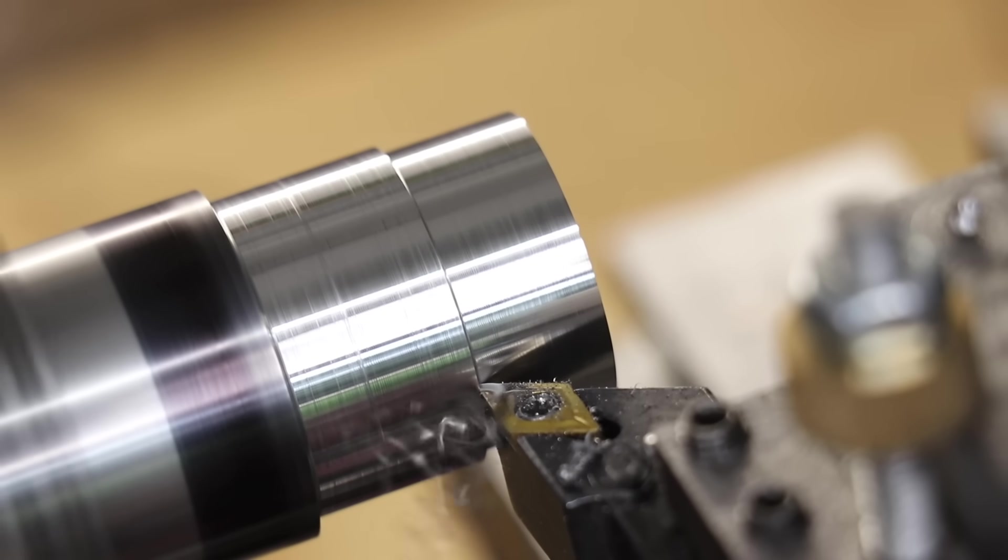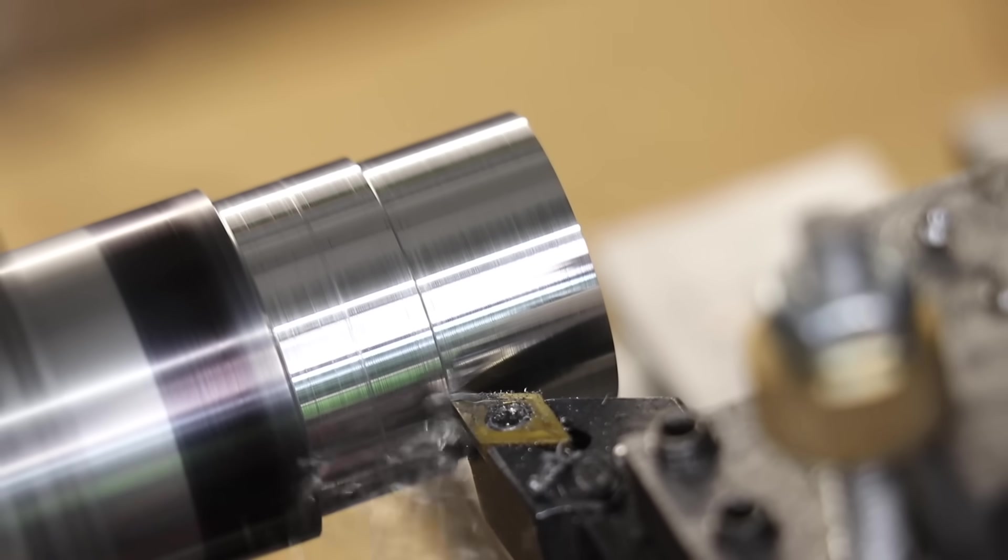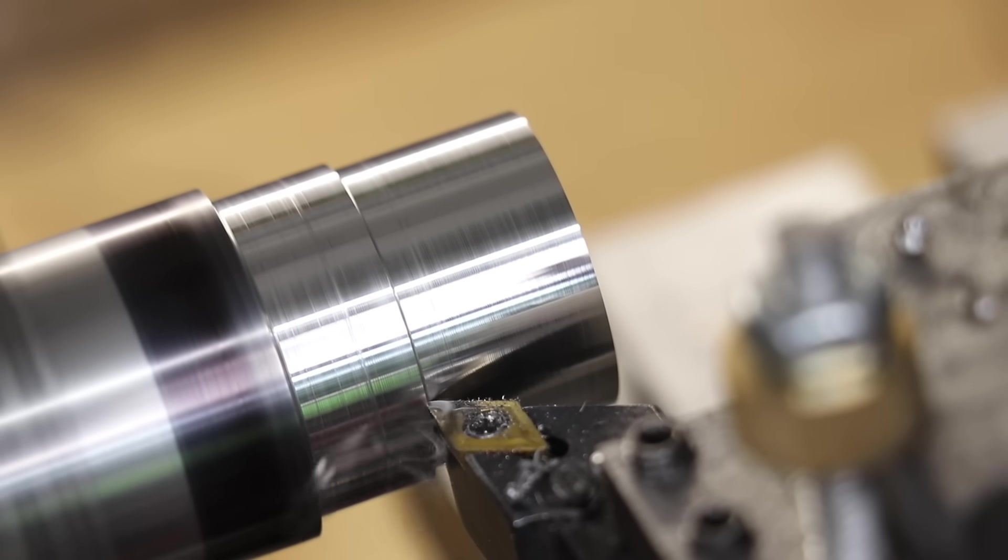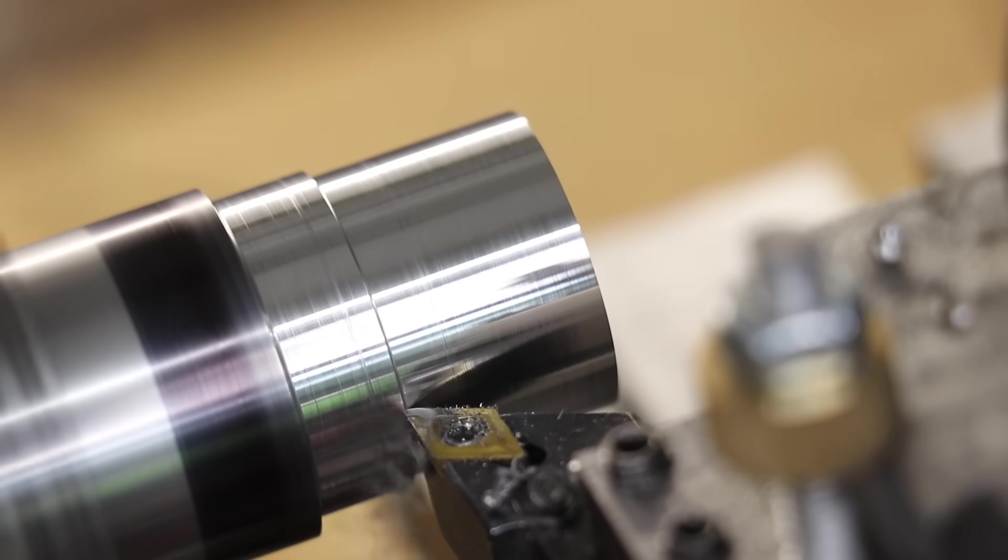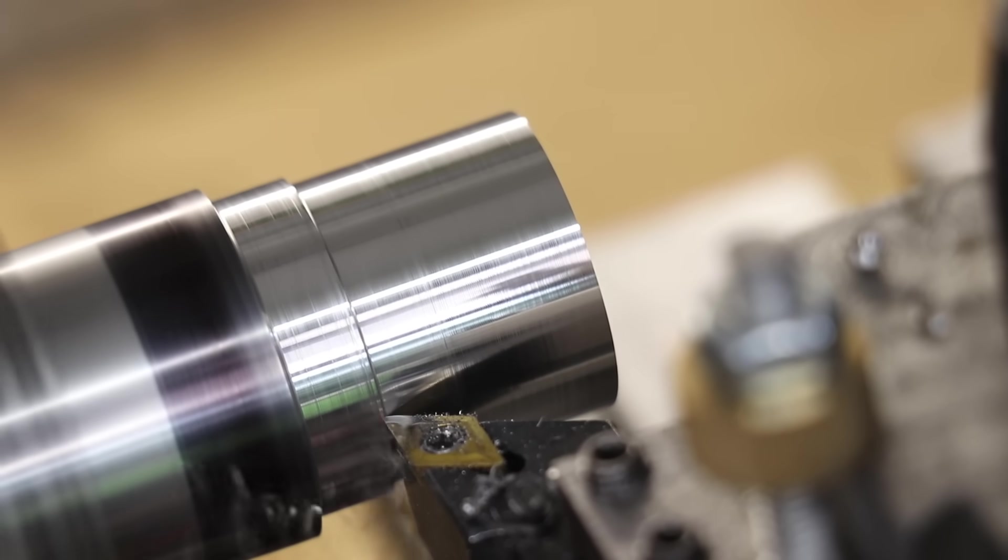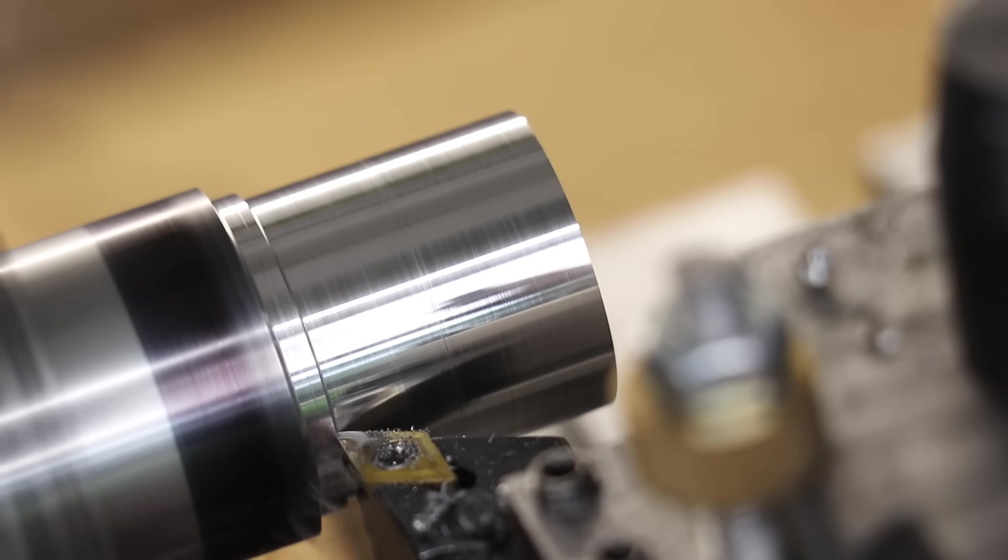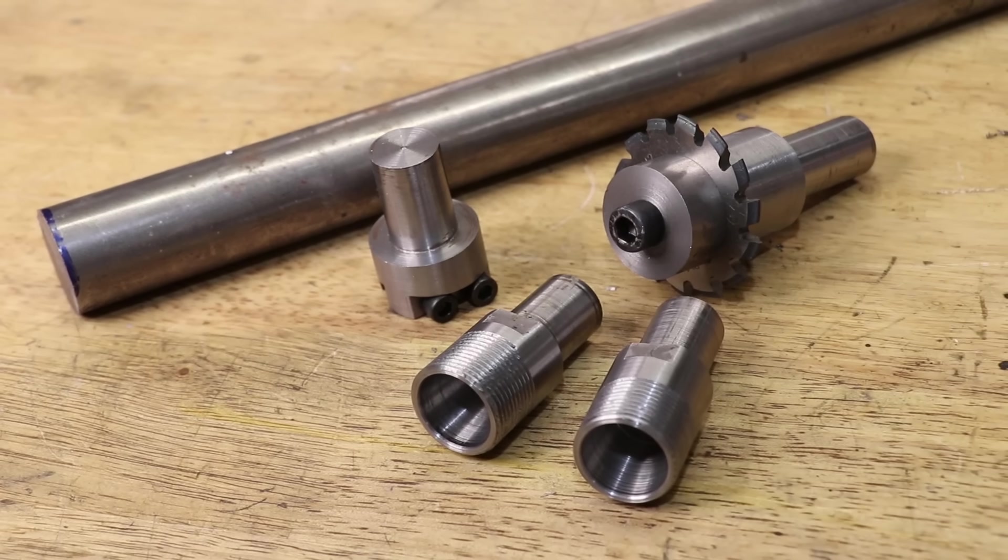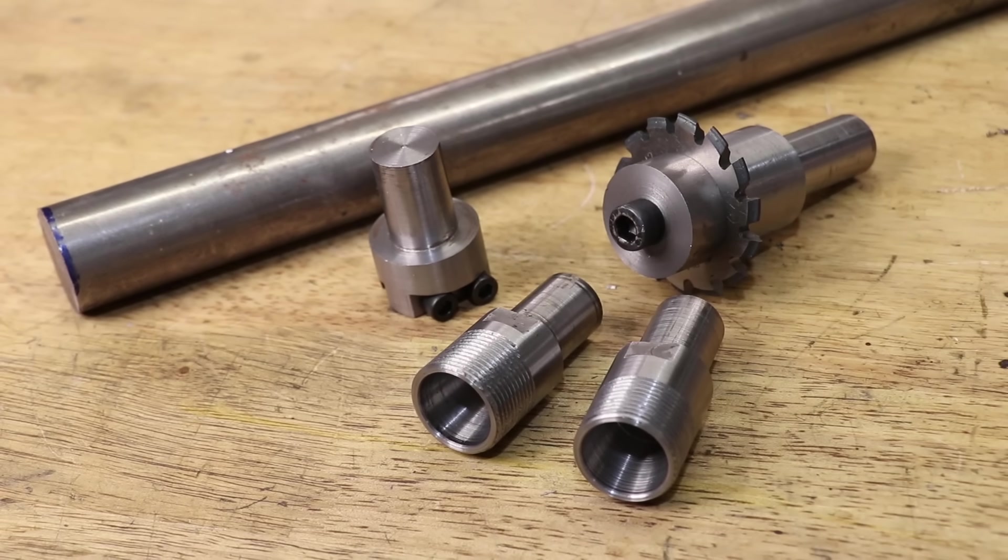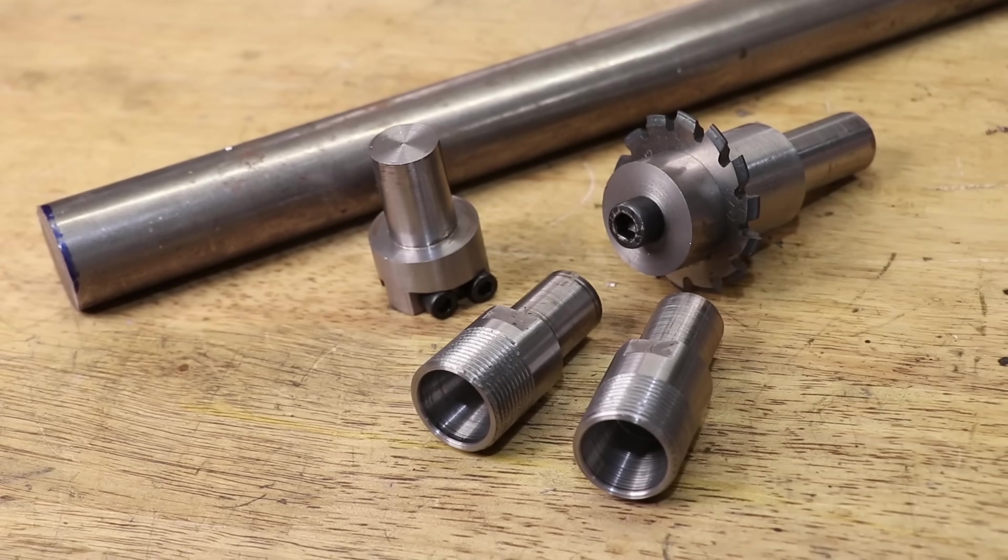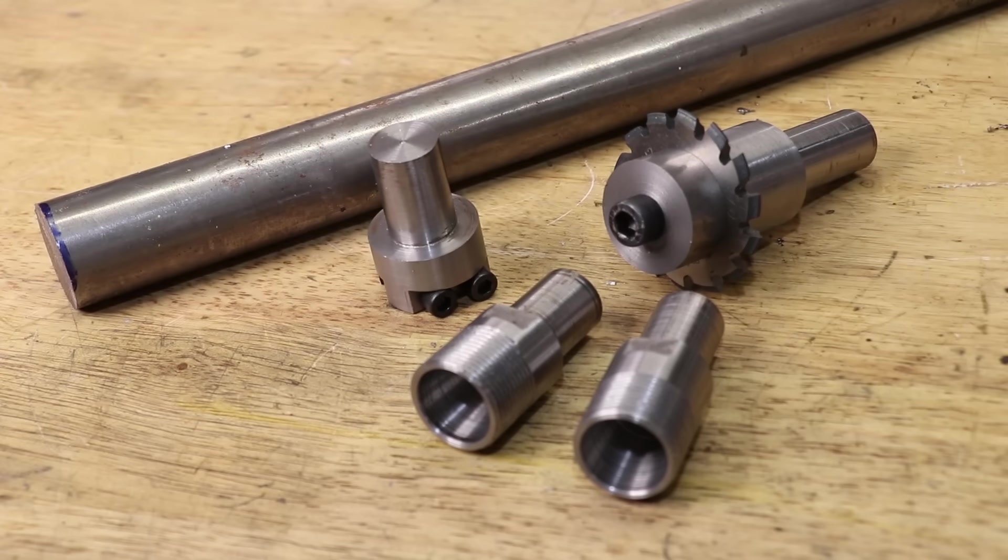12L14 is also known as free machining steel, and like the name implies, this grade is made to be machined on a lathe or a mill. And even on my small lathe, I've been able to take 1mm depth of cuts and get really good surface finishes. It's also cold drawn, so it has a pretty decent tensile strength, so I've used it for tool holders and that was certainly strong enough.